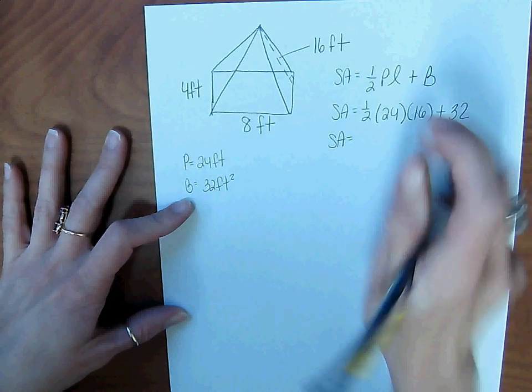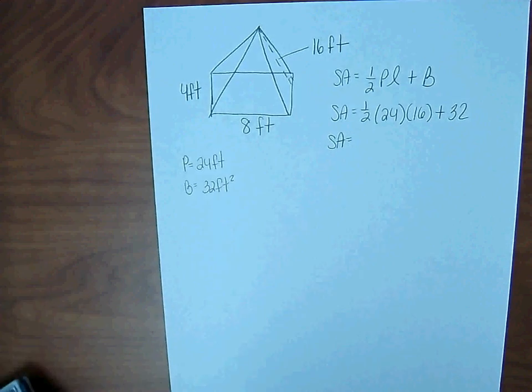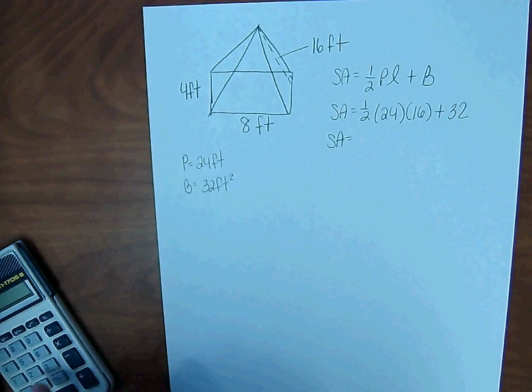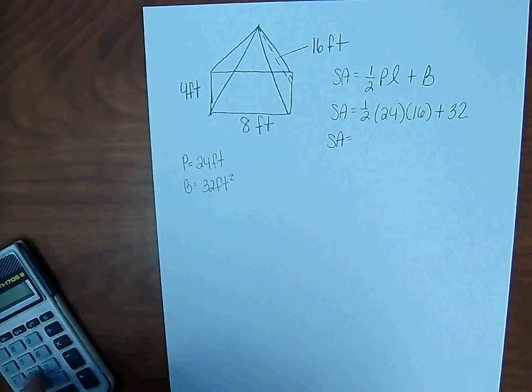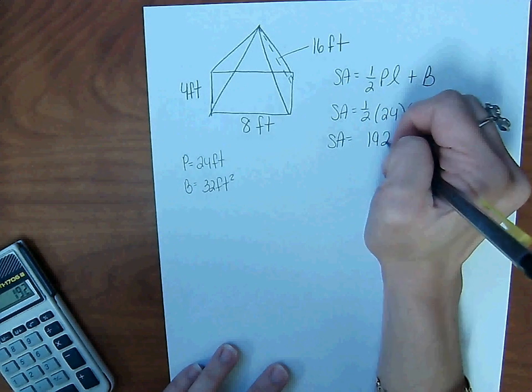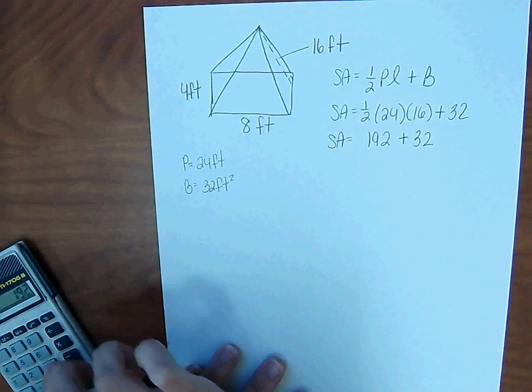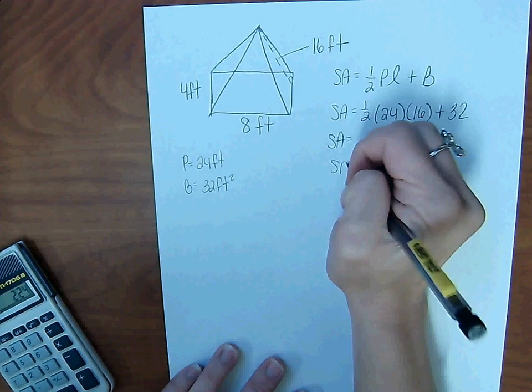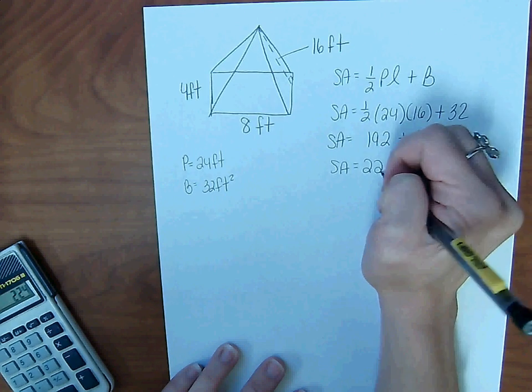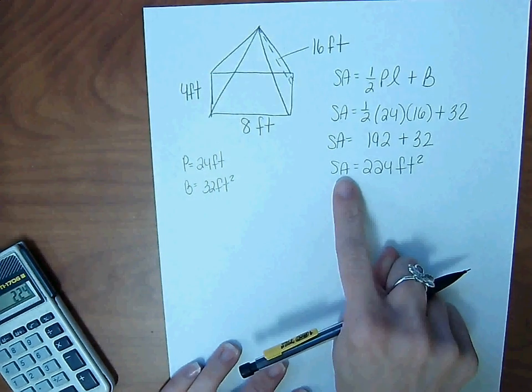Remember, plus signs mean to stop. So we're going to multiply one-half, 24, and 16. And that's going to give us 192. Stop and add 32. So the surface area is 224 feet squared because we're finding area.